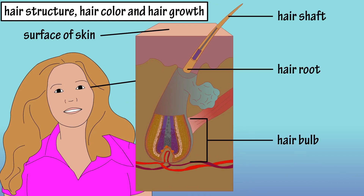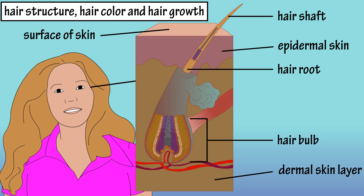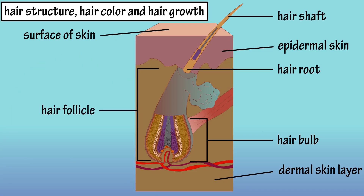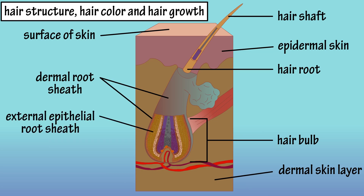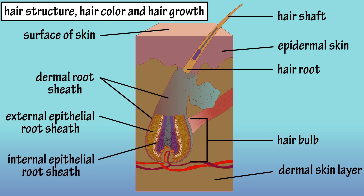The hair shaft is the top portion of the hair that extends out from the surface of the skin. The hair root extends from the bulb to the surface of the skin, and the bulb extends from the root deeper into the dermal layer of the skin. The hair follicle is the sac or tube that surrounds the hair root and extends into the dermis, and it consists of an outer connective tissue sheath that originates from the dermis, an external epithelial root sheath, and an internal epithelial root sheath.